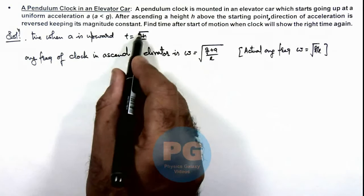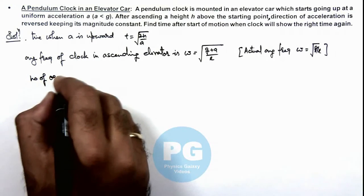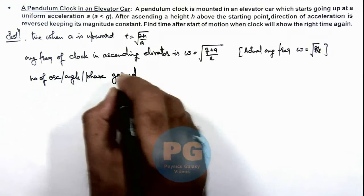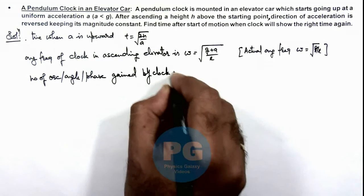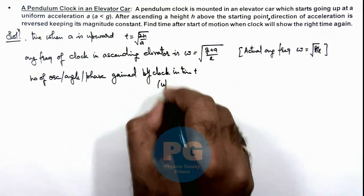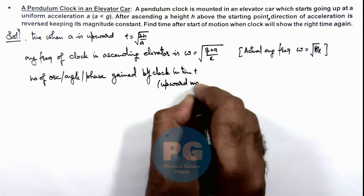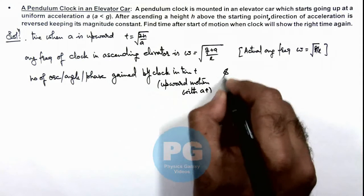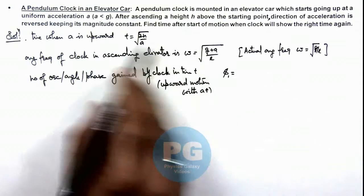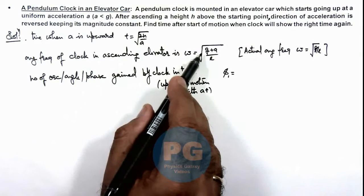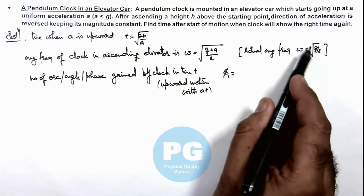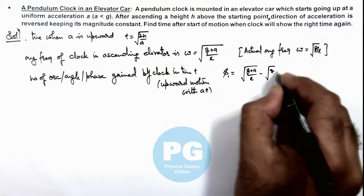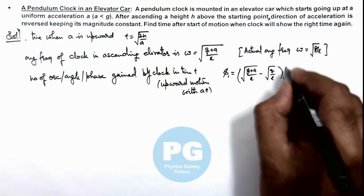We can calculate in this time the number of oscillations, or angle, or phase gained by the clock during upward motion with acceleration. This phase φ₁ equals the difference in angular frequencies multiplied by time t, which is root of (g plus ay) by l minus root of g by l, multiplied by time t, where t equals root of 2h by ay.